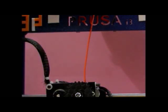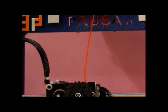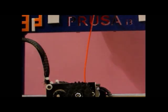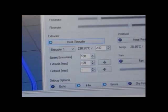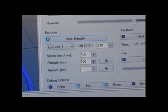Now in Repetier Host, set the nozzle temperature or heat extruder to 230 degrees Celsius. Remember, the filament will melt easily at 230 degrees Celsius, so keep it at its maximum temperature.